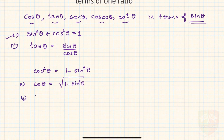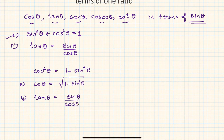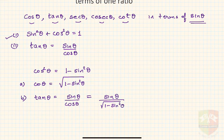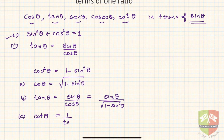Now let us express tan theta. We know tan is sin upon cos, so tan theta equals sin theta upon cos theta. We can replace cos theta with what we just found, giving sin theta upon the square root of 1 minus sin squared theta. Then cot theta is 1 upon tan theta, so its reciprocal gives us the square root of 1 minus sin squared theta upon sin theta.